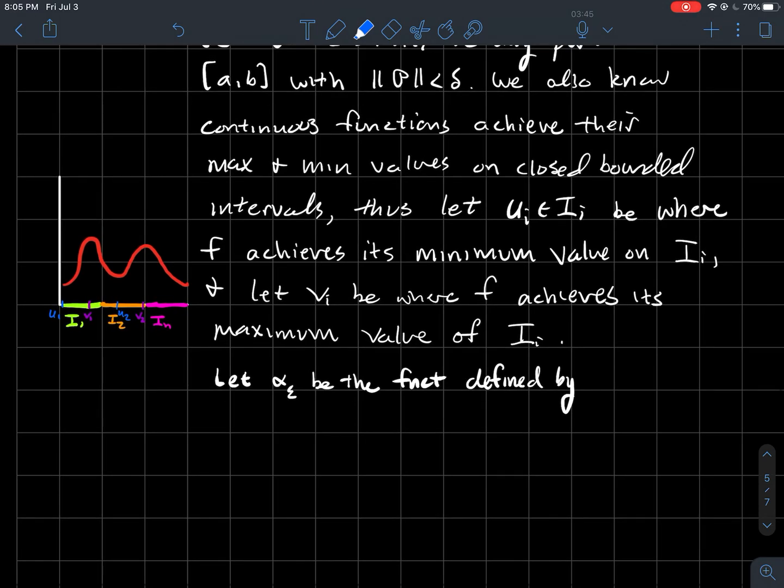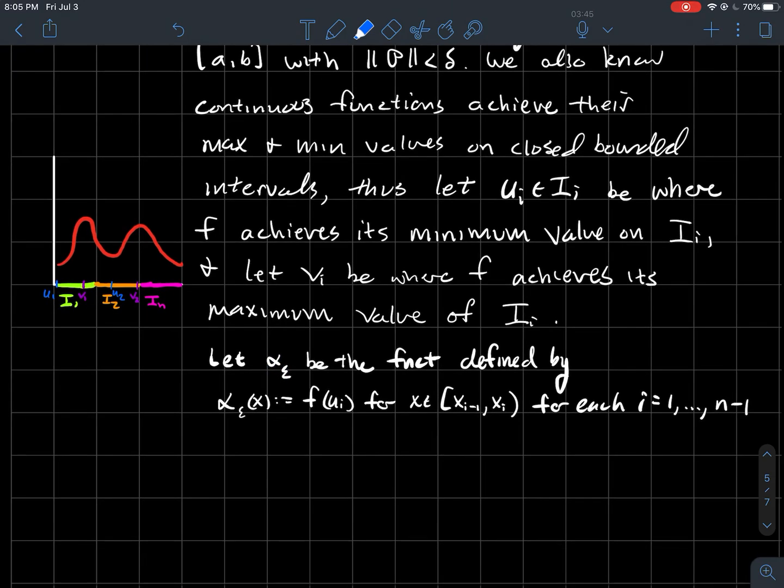So what we're going to do is define a couple of functions. We're going to let alpha epsilon here be the function defined by alpha epsilon of X is going to be F of UI if X is in the sub-interval XI minus 1 to XI. And we're going to let that happen for each of my first N minus 1 sub-intervals, so that's going to be true for I1, I2, all the way up to I N minus 1. Which means that I just need to define what does alpha do on the last sub-interval, IN. We're just going to let alpha epsilon of X be F of UN if X is in that last one. Sorry about that, that's definitely a typo.